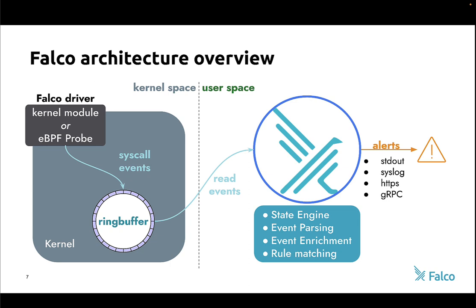By default, we can send alerts to standard out, syslog, HTTPS, and gRPC. The user space component does rule matching and also enrichment — coupling metadata with syscall data to produce readable output messages. We'll tell you the container ID, the file name, who the user was, the parent process, the child process — all the things to make forensics and troubleshooting easier. At the most basic level: we capture events from system calls, compare them against rules, and if something is out of whack, we let you know.